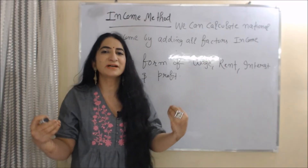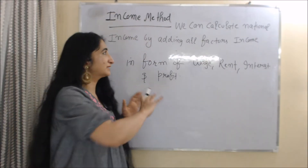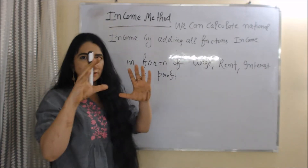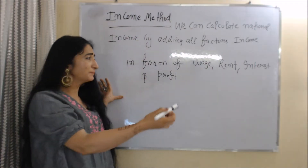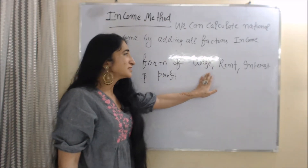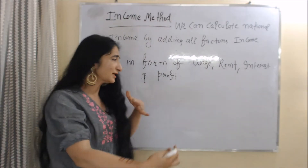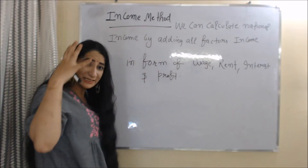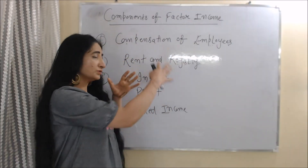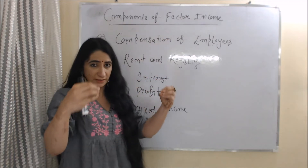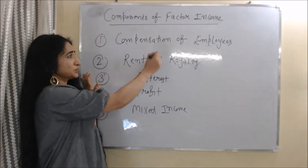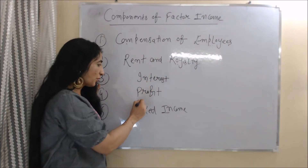Now we will talk about the income method of calculating national income. What is the income method? According to this method, we calculate national income by adding all factor incomes in the form of wages, rent, interest, and profit. There are four factors of production — some receive income as wages, some as rent, some as interest, and others as profit. The components of factor income include compensation of employees, rent and royalty, interest, profit, and mixed income.